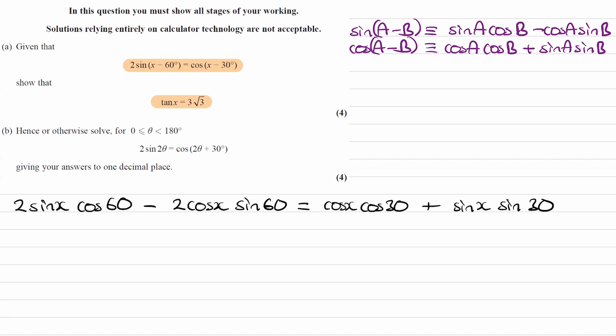Now we can tidy up this equation. So the cos 60°, sin 60°, cos 30°, sin 30°, we can turn those into numbers. Cos 60° is equal to 1/2. So for the first term, 2 times cos 60°, 2 times 1/2, will just be 1.